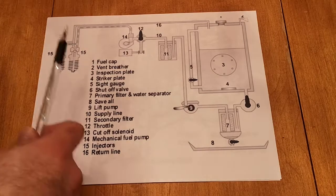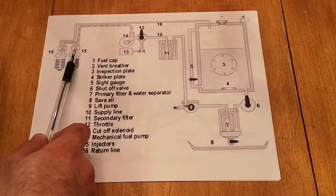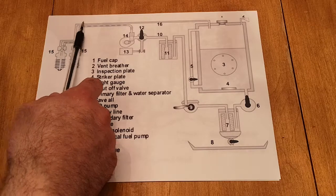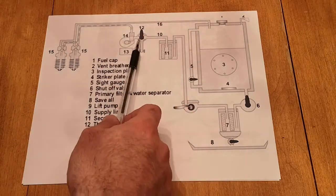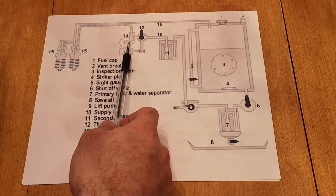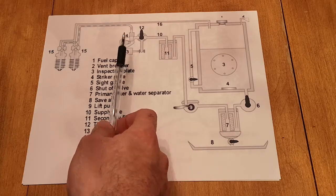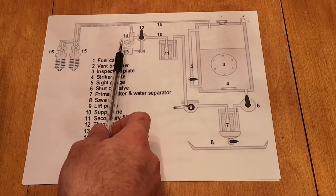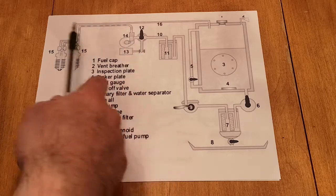The fuel that doesn't go through the injectors will flow through a return line back to tank. The fuel flowing through the injector pump is at that transfer pressure of approximately 25 to 30 psi.